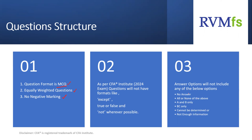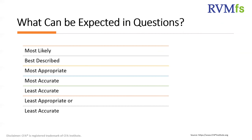Answer options will not include any of the following: 'no answer,' 'all of the above,' 'A and B only,' 'B and C only,' 'cannot be determined,' or 'not enough information.' You are not going to have any questions ending with any of these. Questions will not be structured as 'A is correct, B is correct — if both A and B are correct' — that kind of question format will not appear.